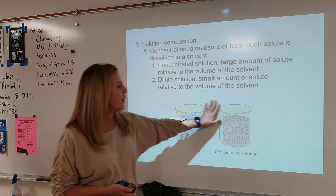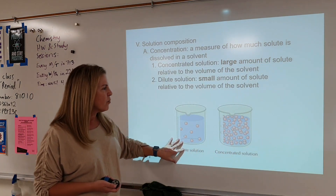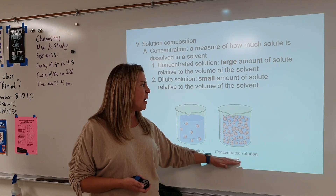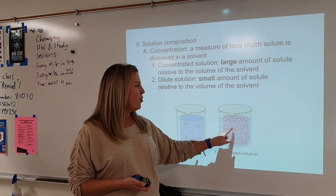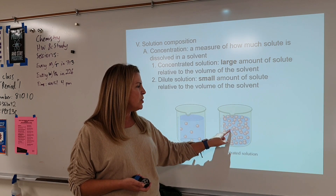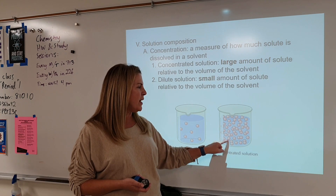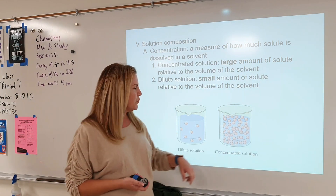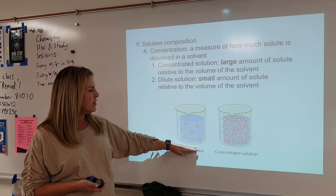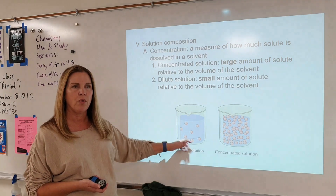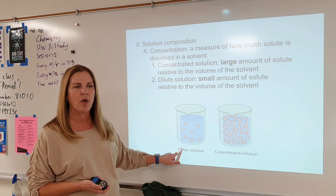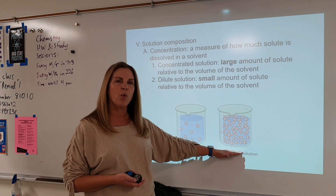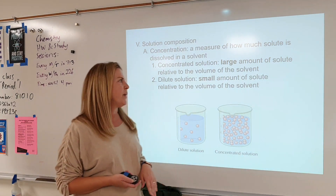Looking at the diagrams here, we can see that this one is more concentrated. The solute are the little red circles; the solvent is the liquid. Here we can see that there is less solute for a given amount of solvent, so we would call this more dilute and this more concentrated.